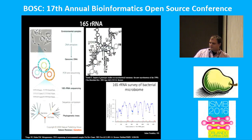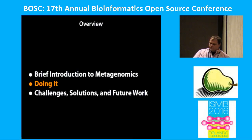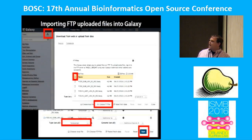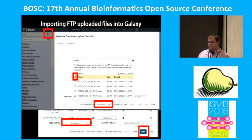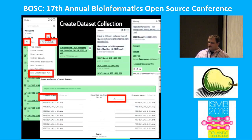With the 16S approach, you actually target a variable region within the 16S gene. When we go to do it inside of Galaxy, one of the biggest problems is actually getting these large number of datasets into Galaxy. We can use an FTP process where we actually import using an FTP file server, send the files to Galaxy, and then import them into Galaxy.